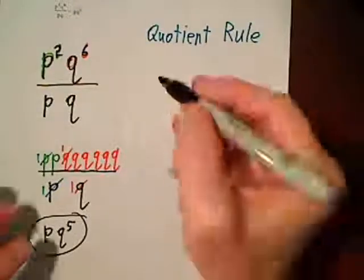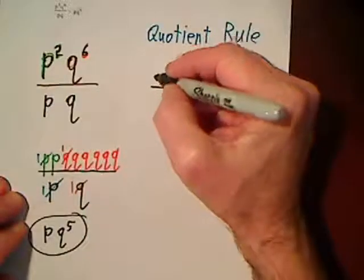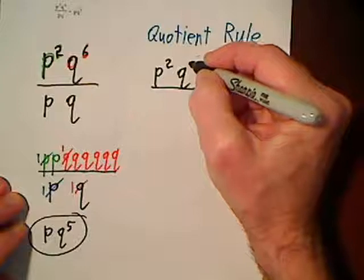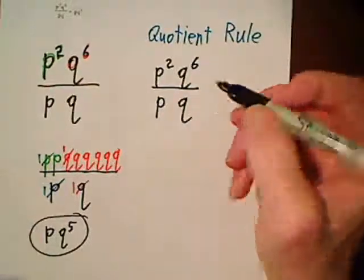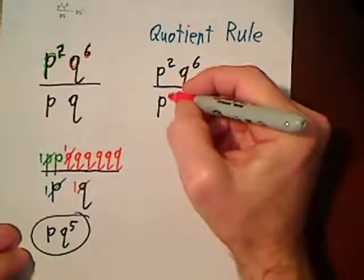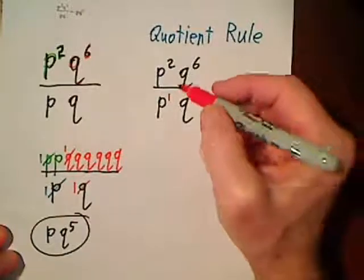let's rewrite our equation—excuse me, our expression, it's not an equation. And you have to keep in mind there's an exponent of one, an exponent of one. And then you simply say